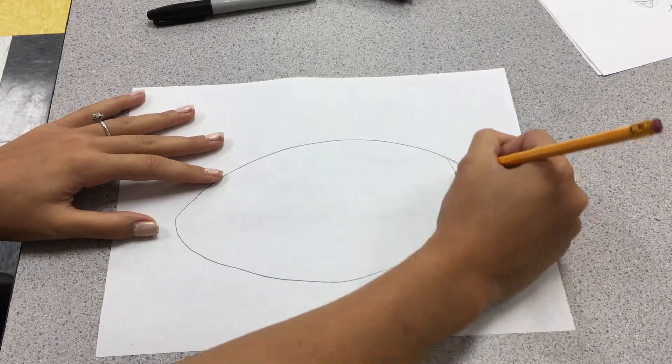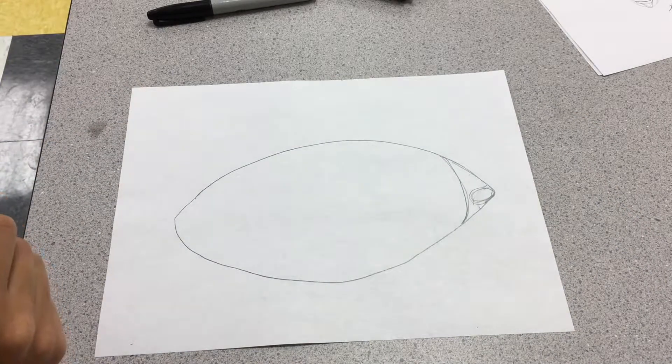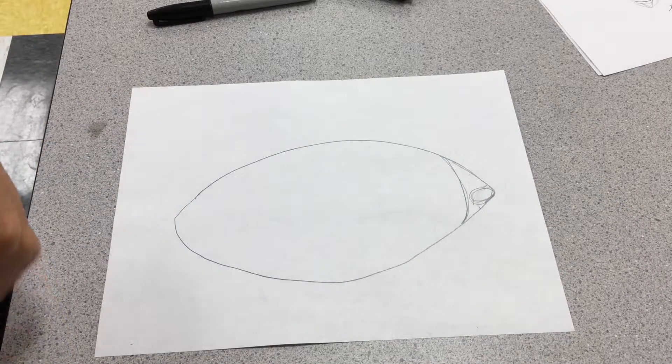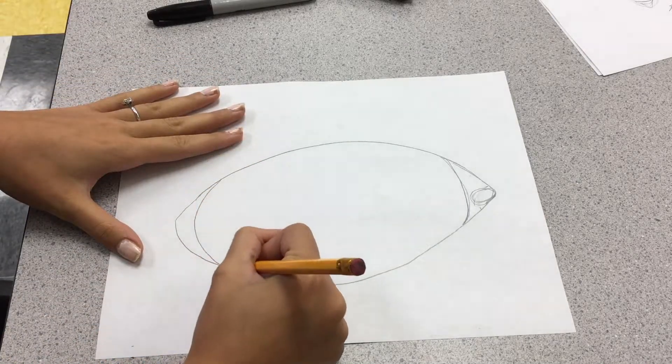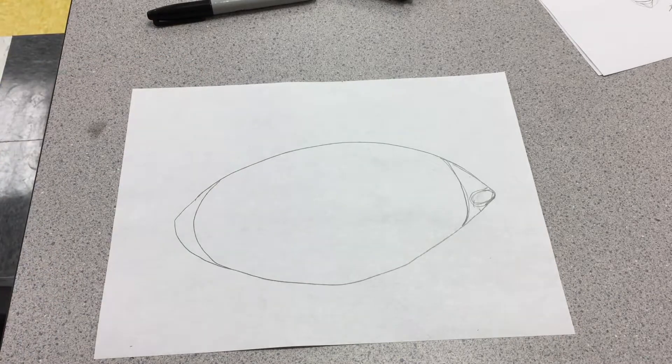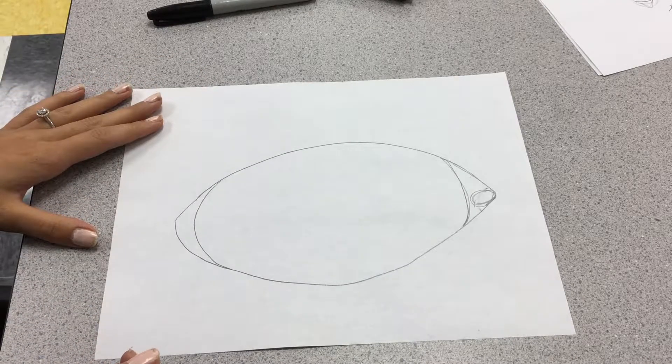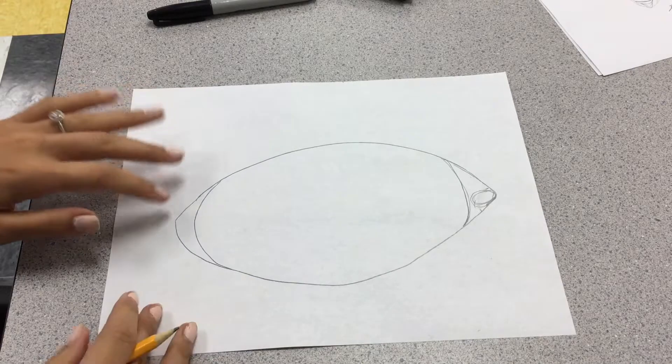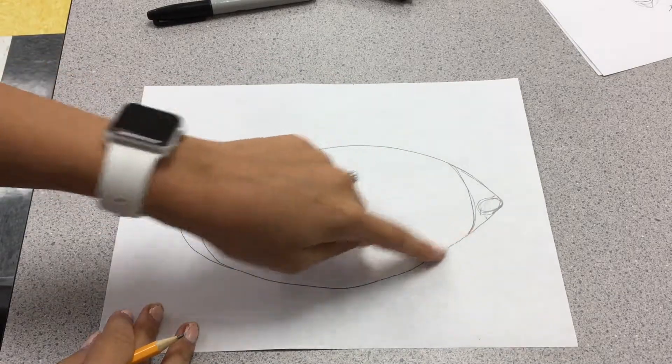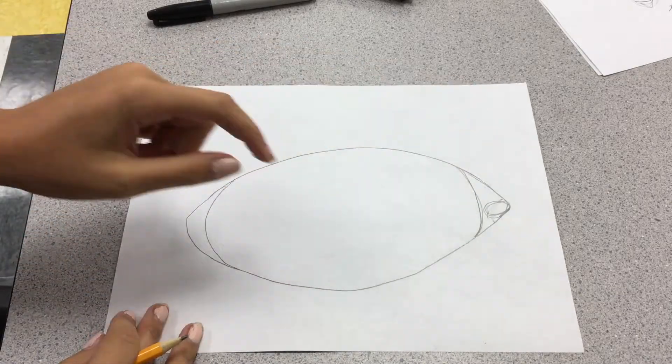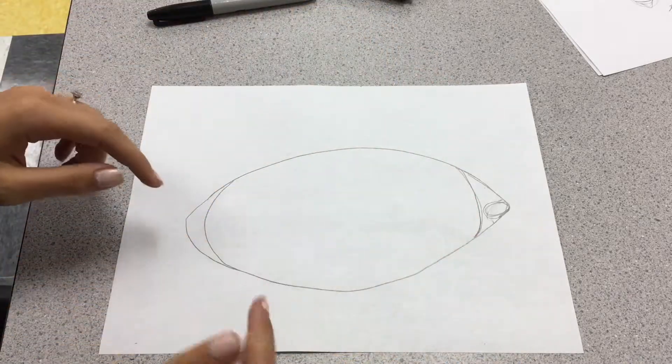And then we're going to make the curved part of our eye. Then we're going to make the curved part of our eye over here. So as you guys can see, your eyeball is a circle, but your eyelid covers part of that circle. So you can imagine if this is your whole eyeball, the eyelids are covering part of it.